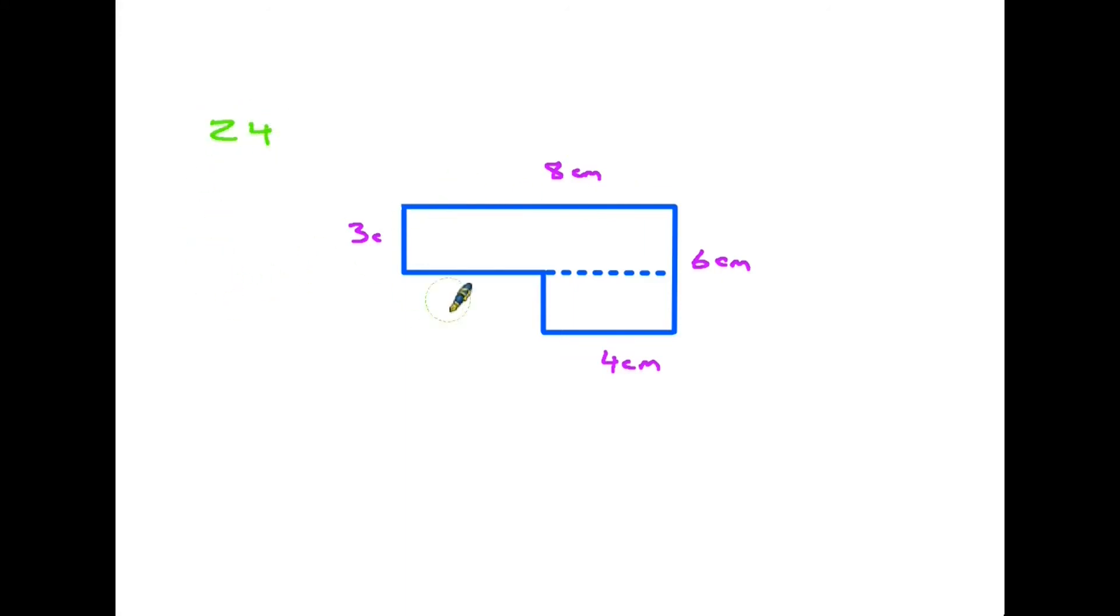The bottom one, well it's 4, but I need to know what this side here is. Well that's not too bad. We know that the overall height is 6. We know that this piece here is the same as the 3 here, so that must be 3. So to add up to 6, this side here must also be 3.